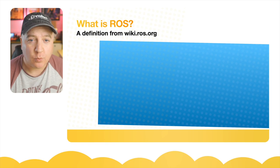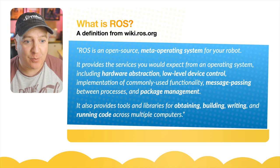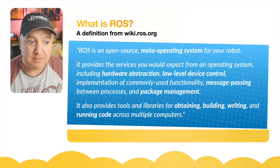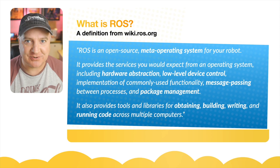What is ROS? A definition from wiki.ros.org: ROS is an open source meta operating system for your robot. It provides services you'd expect from an operating system, including hardware abstraction, low-level device control, implementation of commonly used functionality, message passing between processes, and package management. It also provides tools and libraries for obtaining, building, writing, and running code across multiple computers.